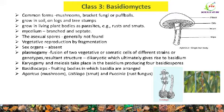Another example is Ustilago, which causes smut disease to plants such as smut of maize. And Puccinia, which causes rust disease to wheat and other plants.